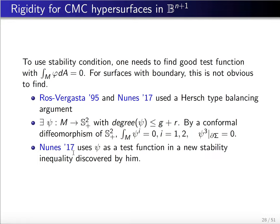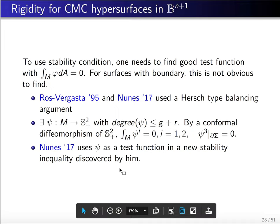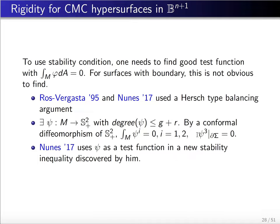Nunes improved this argument with a new stability inequality — using the stability condition to prove an additional stability inequality with a Dirichlet boundary condition so that the third component of psi can be used. However, this argument works only in two dimensions.